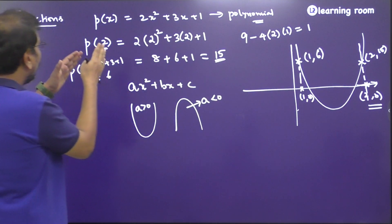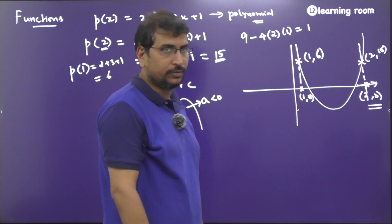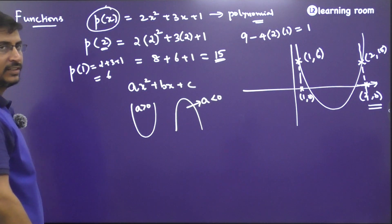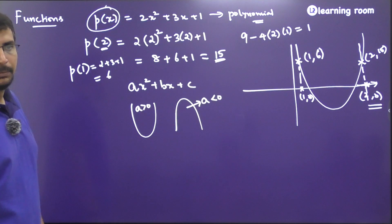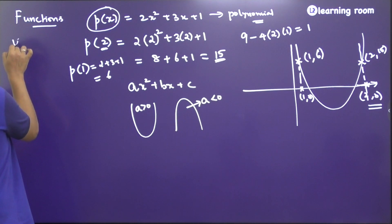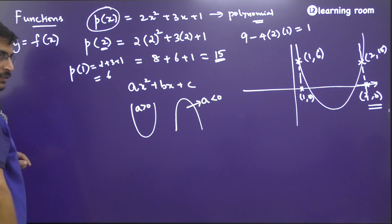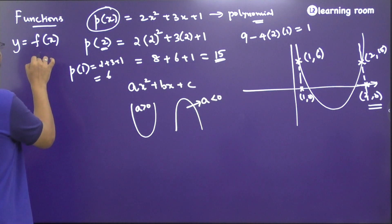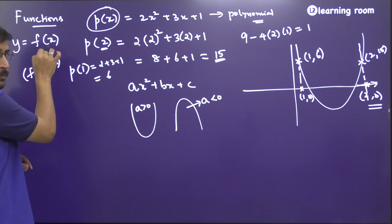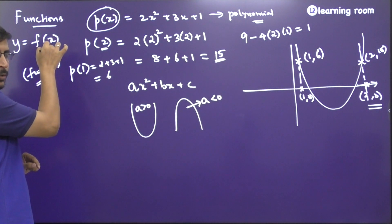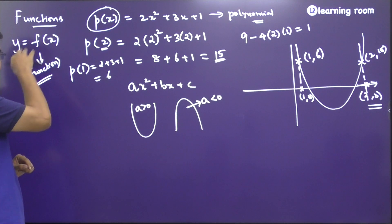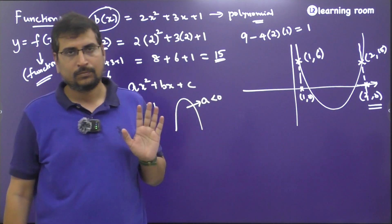Now, what do we do with this in terms of functions? You've been writing p(x) — that's a polynomial of one variable x. Similarly, if I write y = f(x), I call this a function of one variable. As you keep changing the input variable x, you get different outputs for y, and you can plot those points on the graph sheet.